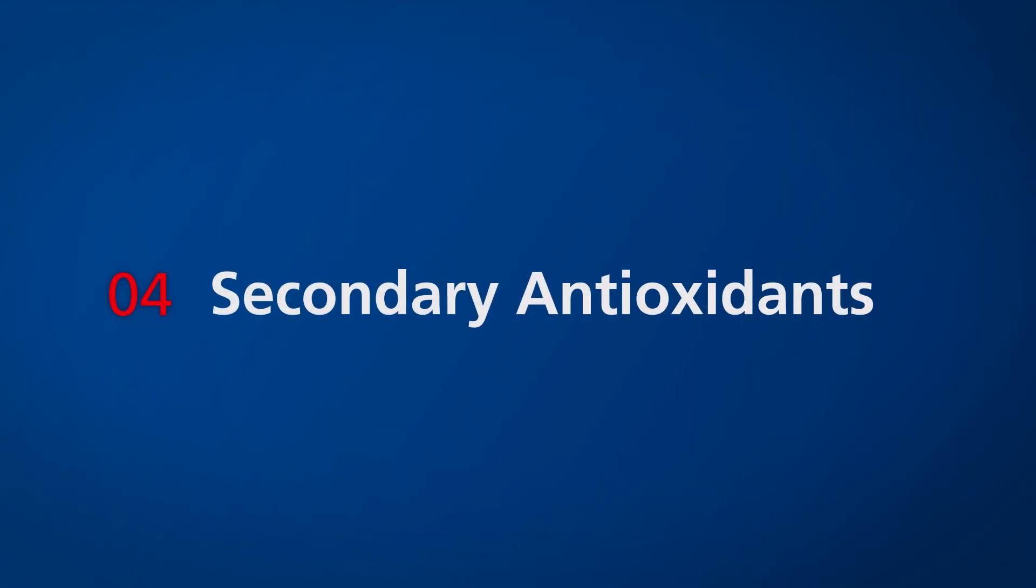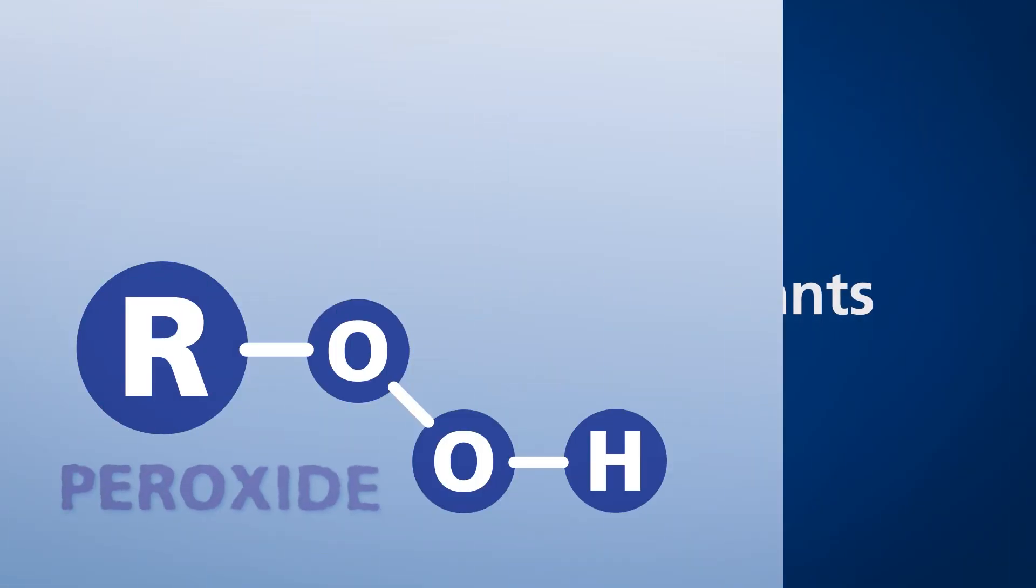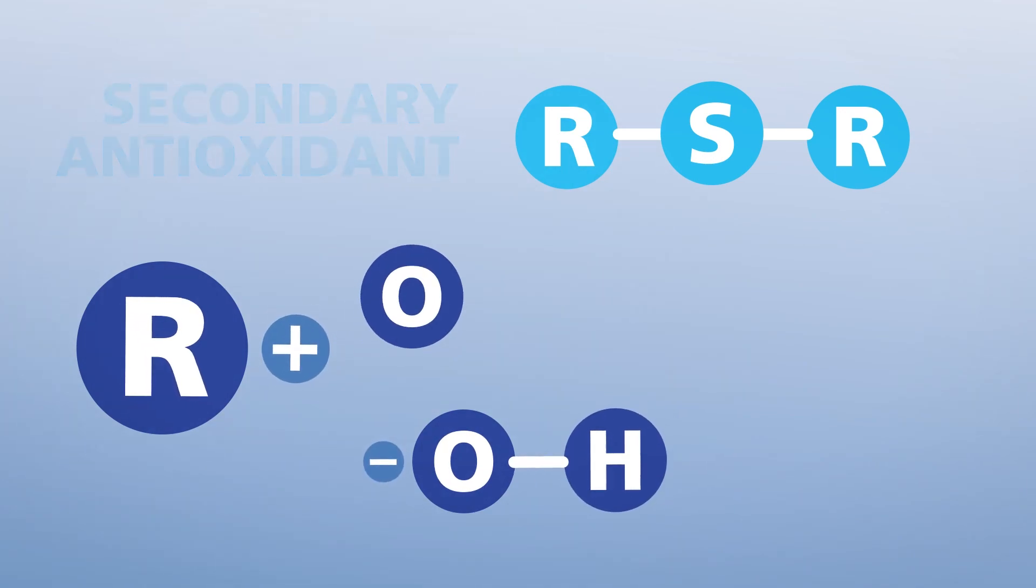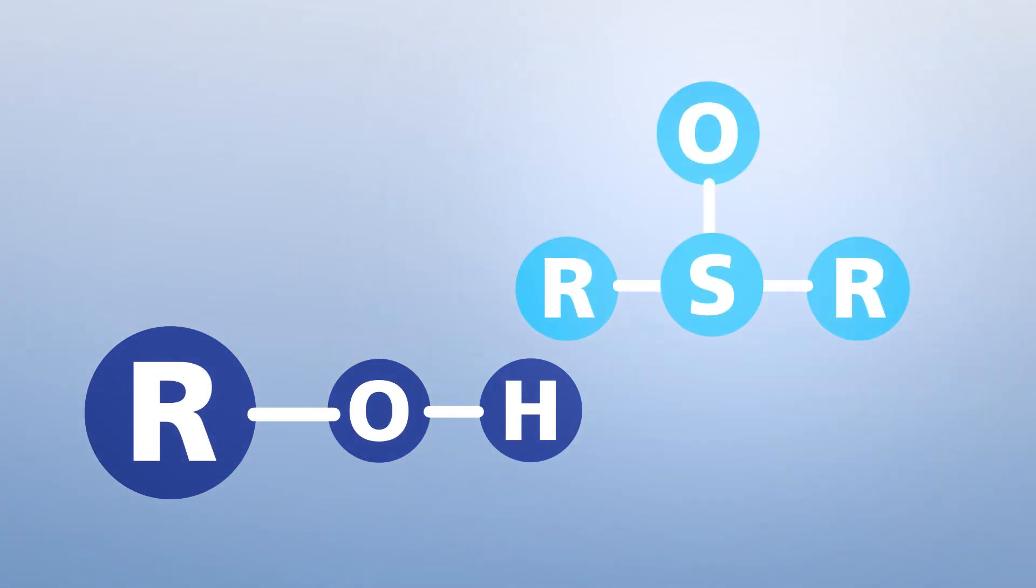Secondary antioxidants react with peroxides, which are often generated as the lubricating oil reacts with oxygen. These antioxidants are responsible for breaking the cycle and preventing branching and further propagation.